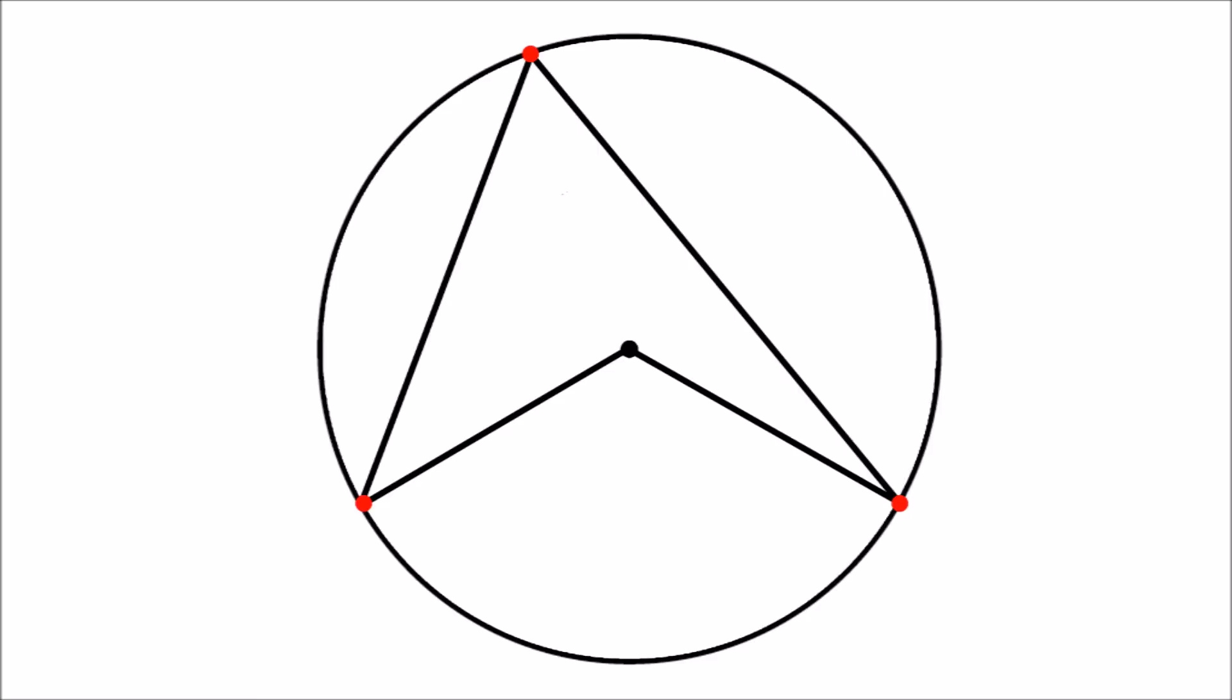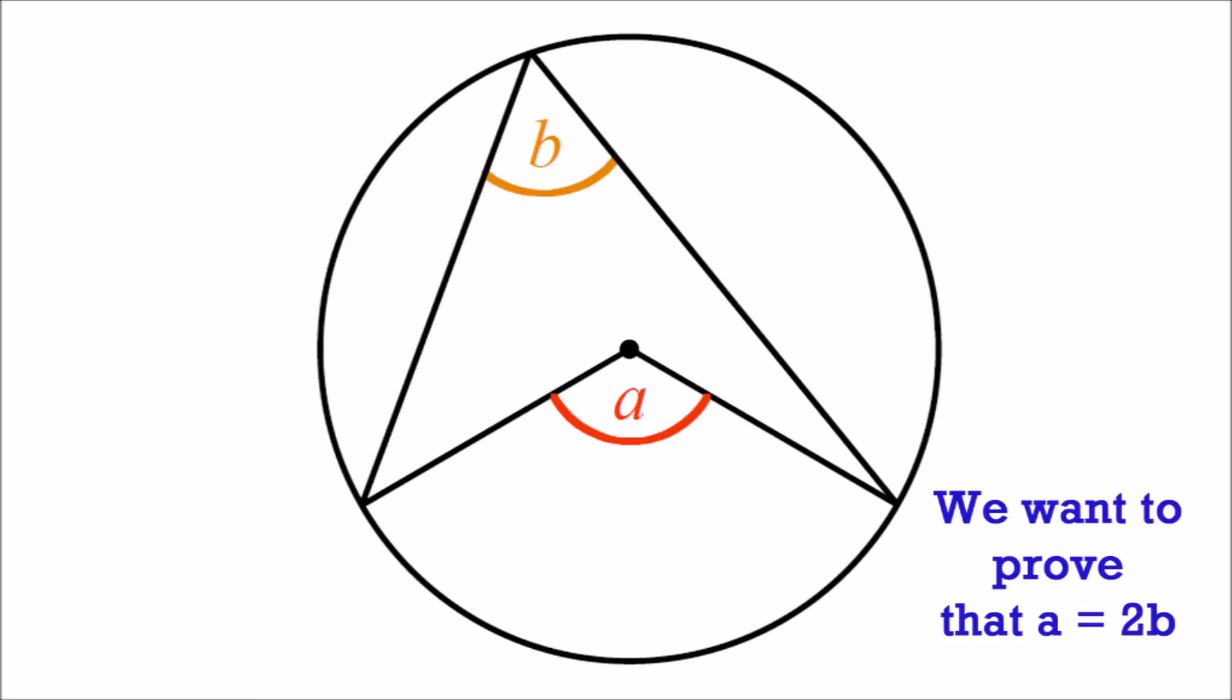We label the angle at the centre and the angle at the circumference. In symbols we want to prove that A equals 2B.